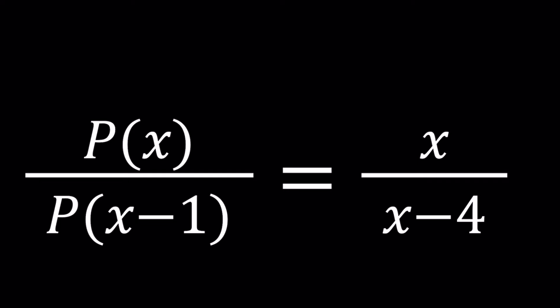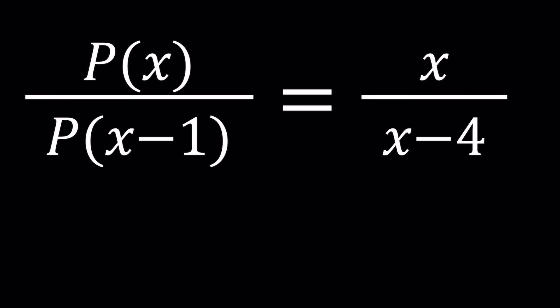We're going to be solving for P of X. Now let's go ahead and first cross multiply, and we're going to turn this into X minus 4 multiplied by P of X, and that equals X times P of X minus 1.